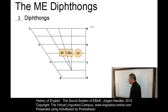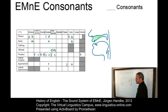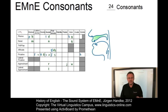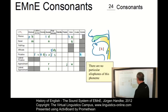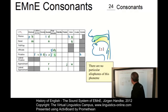The consonantal system of Early Modern English was almost that of Middle English. The only system-wide changes were the loss of the allophonic variants of the glottal fricative — so there are no longer any particular allophones of this phoneme — and the addition of /ʒ/, a post-alveolar fricative, to the system.